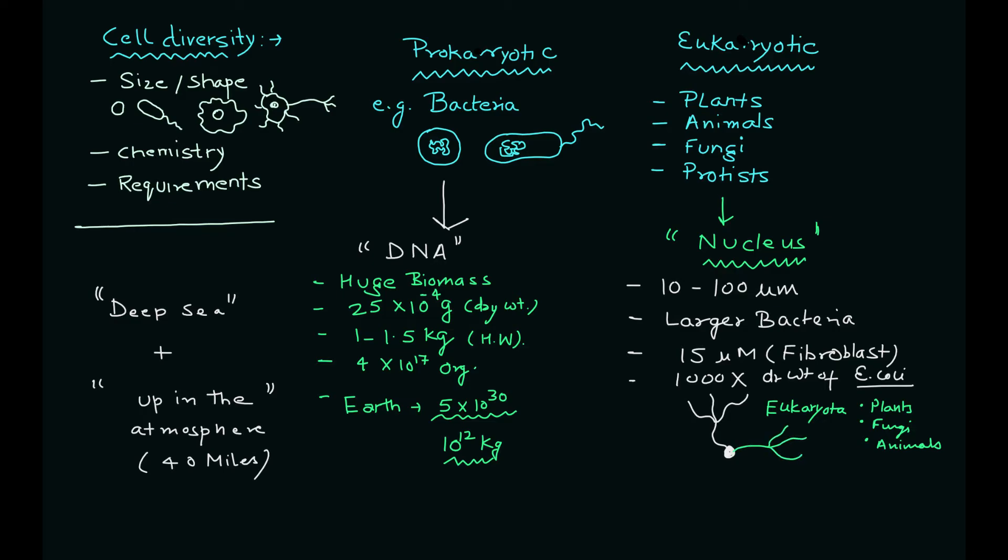In archaea you have Thermococcus, you have Halococcus. These are typical examples. Then you have Eubacteria which includes E.coli, Bacillus. These are typical examples of eubacteria. Because of the change in their cellular feature and function, they are categorized into big groups.